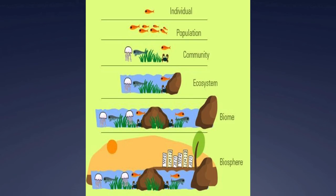Here is a picture taking you through the levels using fish — just an individual fish, then its population of the same fish together, then a community with crabs and grass added in.